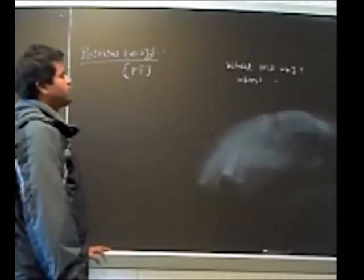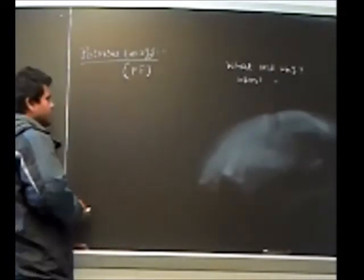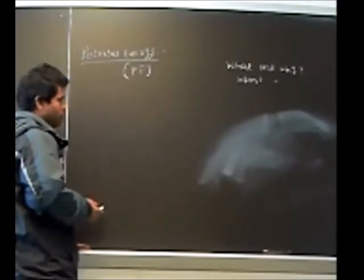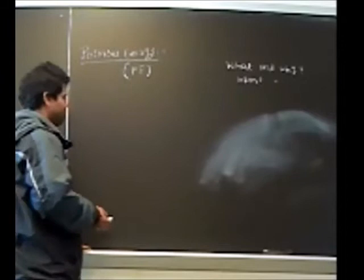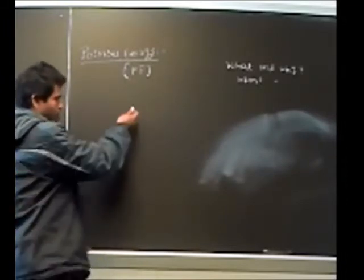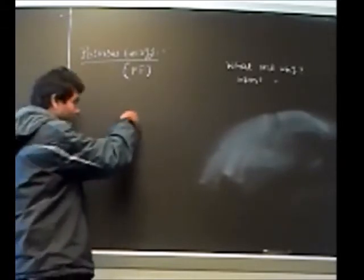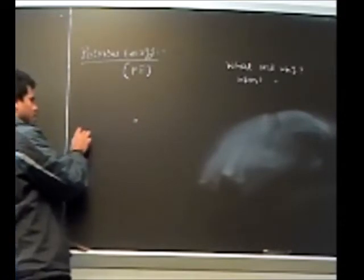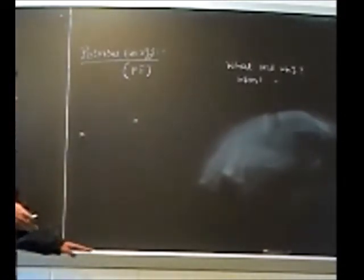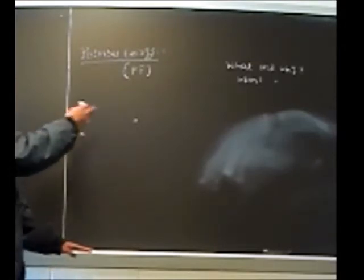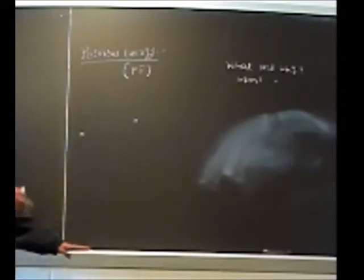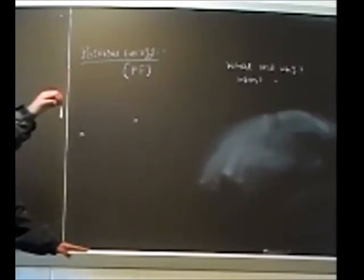What is potential energy? Potential energy is energy contained by any particle because of its presence in a particular location. If a particle is at one location it may have some energy, and if the same particle is at another location it may have some other energy. For example, this chalk piece has potential energy equal to mgh.